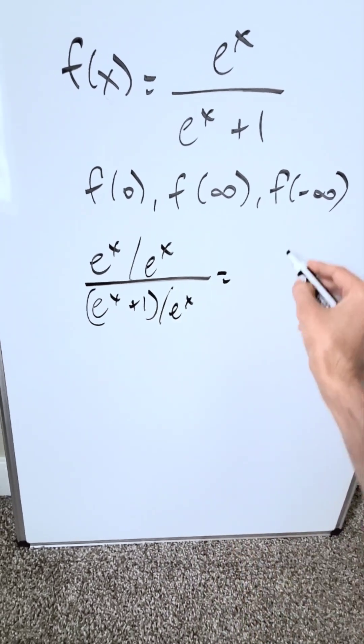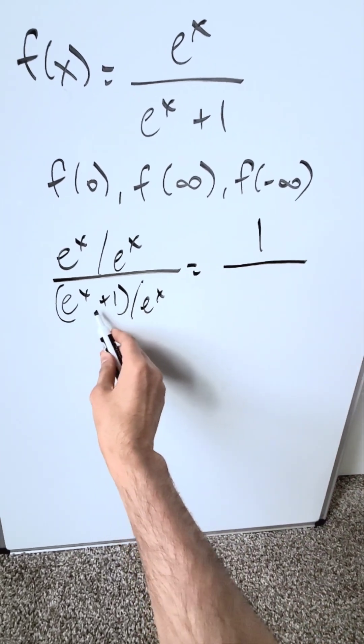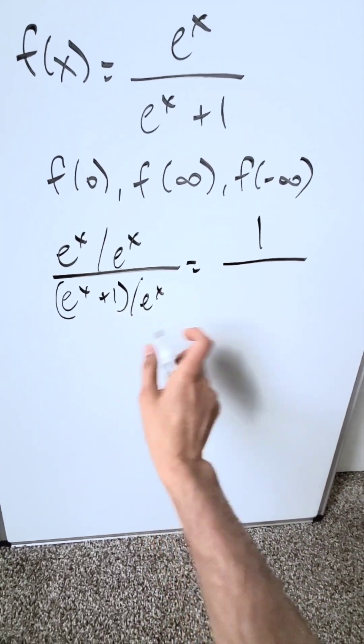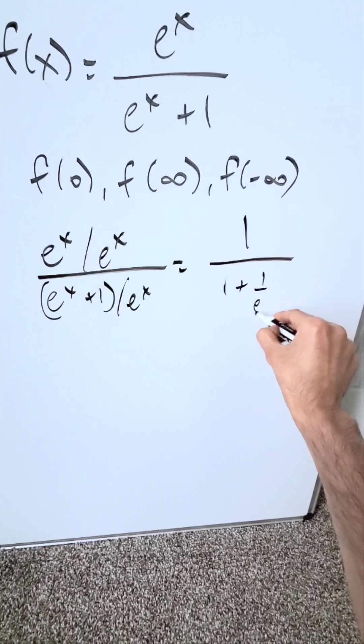Now simplify this. I'll have a 1 over, if you were to take this denominator items and divide them by e to the x, you'll have 1 plus 1 over e to the x.